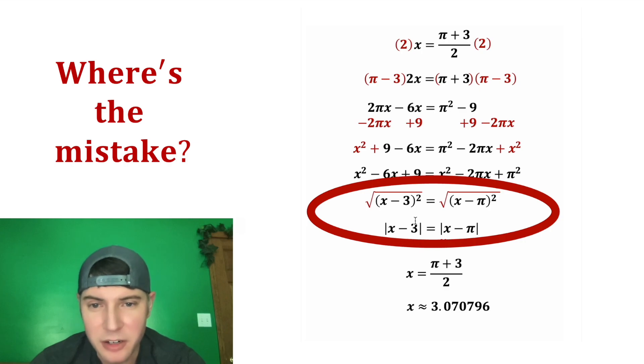So if we plug in 3.07 here, this inside will be positive, which means we don't need the absolute value symbols. But if we plug in 3.07 into this one, this inside the brackets will be negative. So before we get rid of the absolute value symbols, we need to take the negative of this. And now we'll turn the whole thing positive.